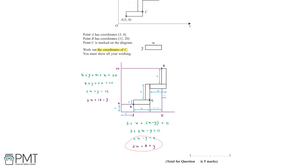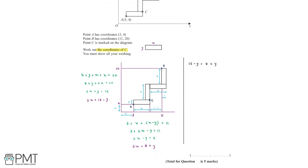We now have two simultaneous equations: 2x equals 16 take away y, and 2x equals 8 plus y. Setting them equal to each other: 16 take away y equals 8 plus y. Moving terms gives us 16 take away 8 equals y plus y, so 8 equals 2y. Dividing both sides by 2, we find that y equals 4.